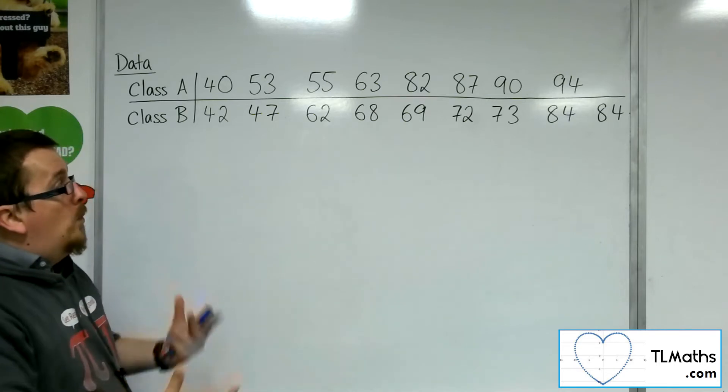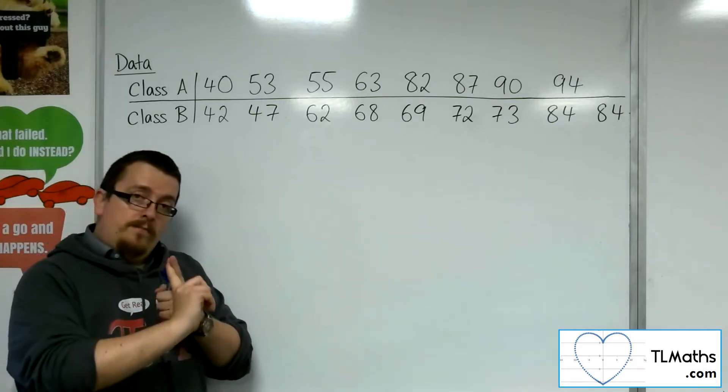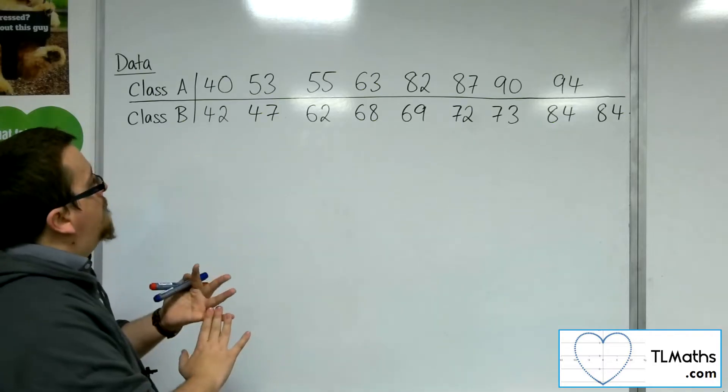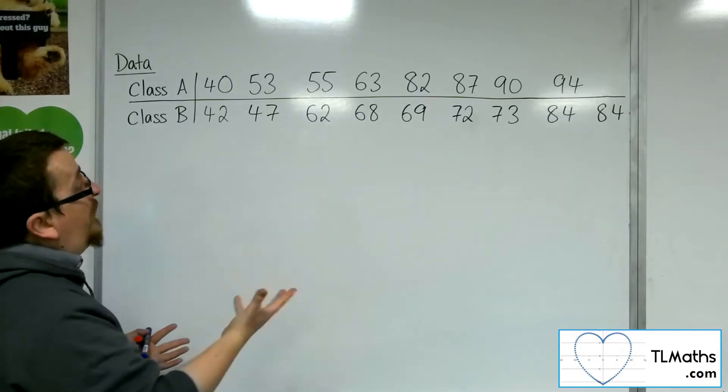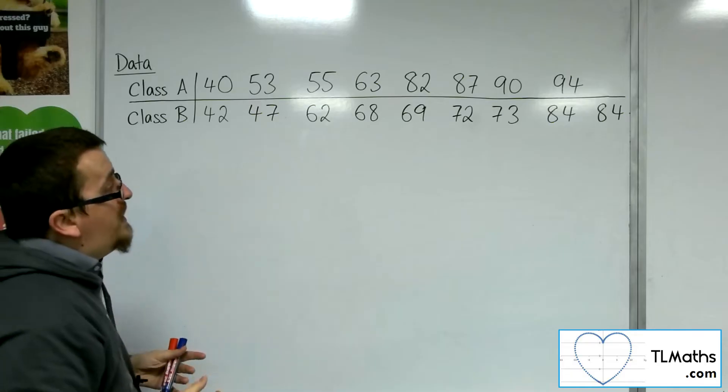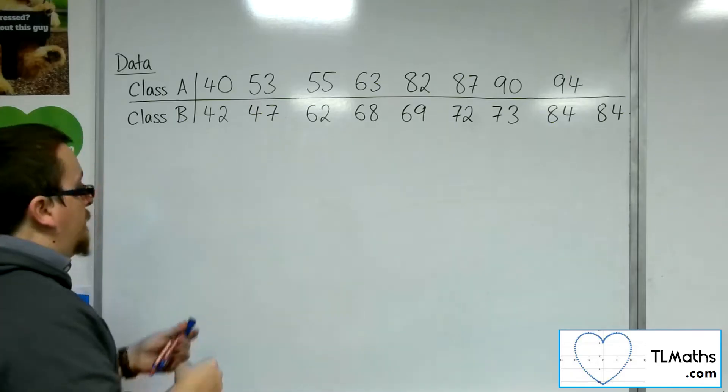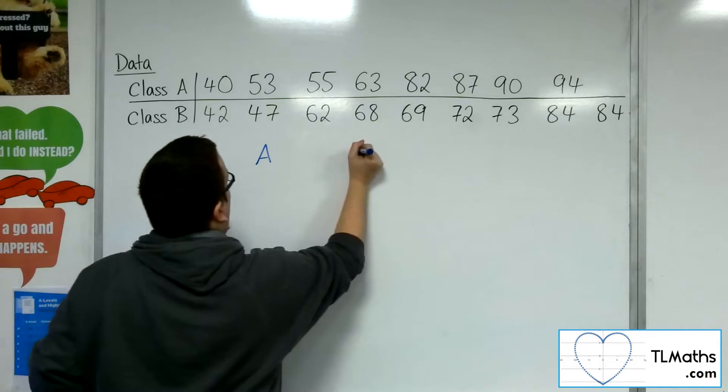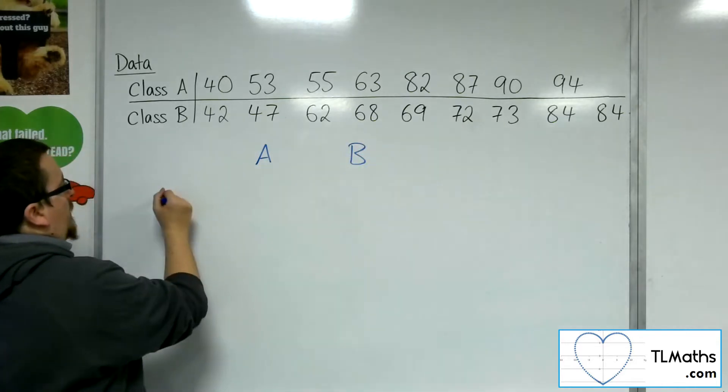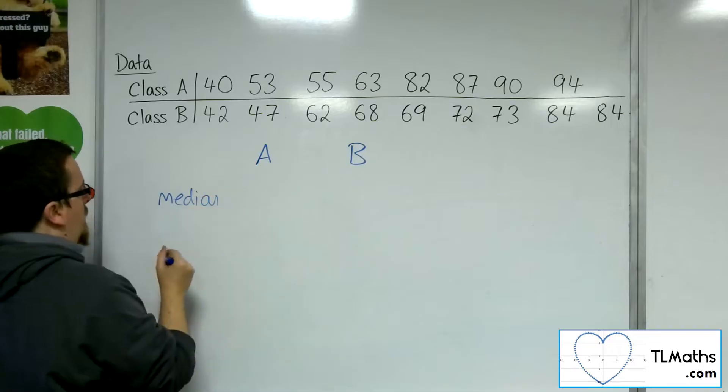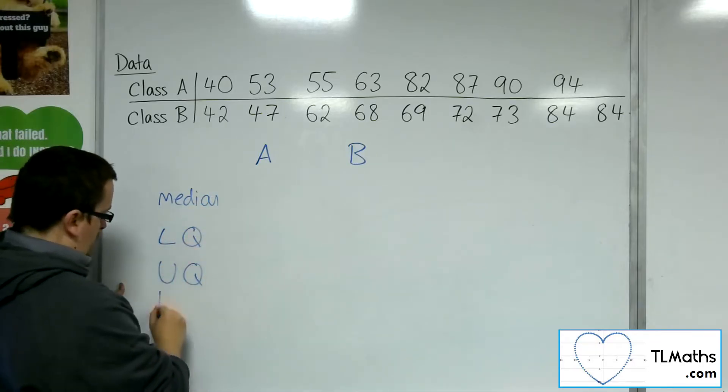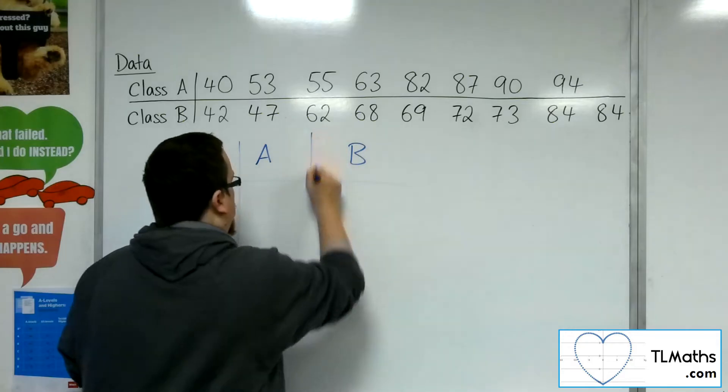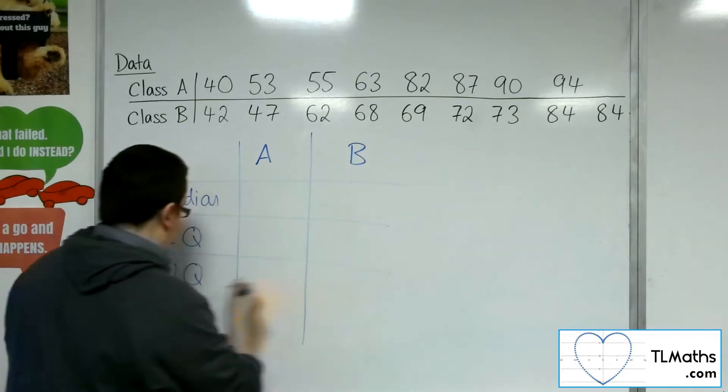So one way of comparing them would be to look at the median, the lower quartile, upper quartile, and subsequently the interquartile range. So it suits using that because this data is in order already, so I can dive straight in and find those out. So I'm going to build up a little table of results so that we've got class A and class B. We're going to look at the median first, then we're going to find the lower quartile, the upper quartile, and consequently the interquartile range. So here's my table.